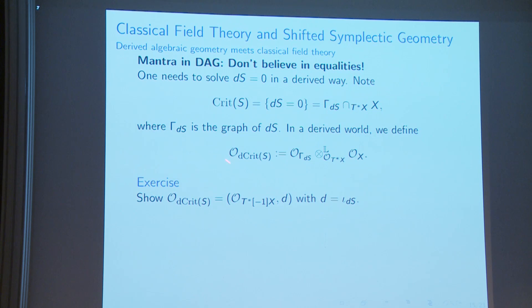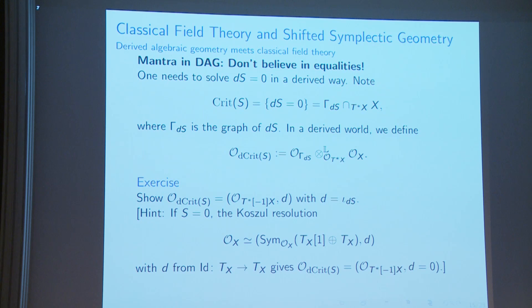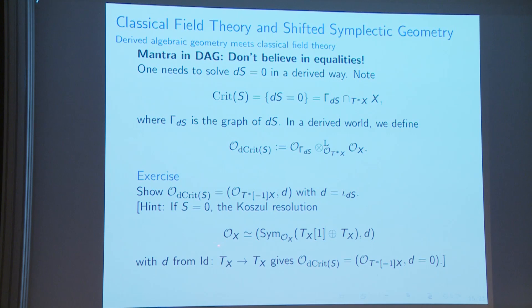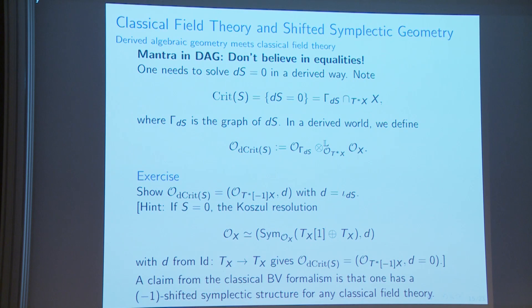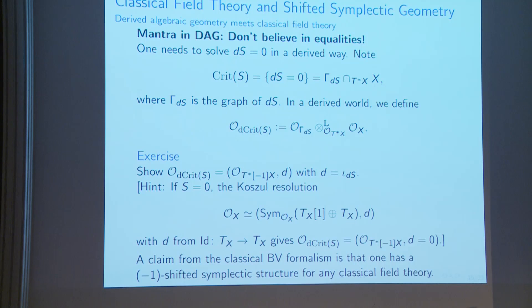To give an idea: if X is a smooth manifold (or algebraic variety) and you compute the derived critical locus, you end up with the structure sheaf of a (-1)-shifted cotangent bundle with some differential. When the action S is zero, the resolution uses the natural map and after taking cohomology the terms cancel to give O_X. The (-1)-shifted symplectic structure on the derived critical locus is expected from the classical BV formalism.